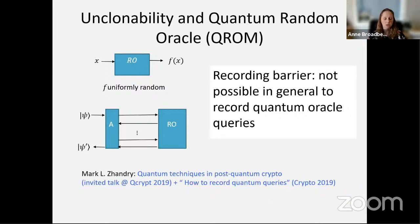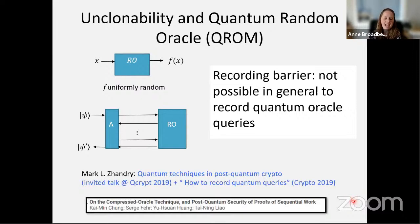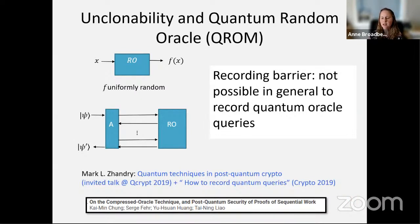One technique I want to highlight: at QCrypt 2019, Mark Zhandry gave an invited talk on quantum techniques in post-quantum crypto. That's also the year of a technique authored by Zhandry called the compressed oracle technique — the paper was called 'How to Record Quantum Queries.' It's a surprising technique to overcome this recording barrier, and we had a talk this week on this technique, showing it remains very relevant to quantum and post-quantum cryptography.